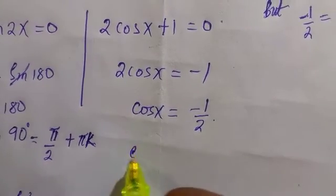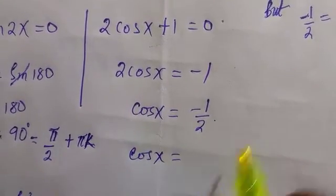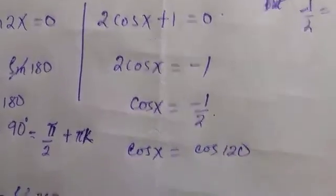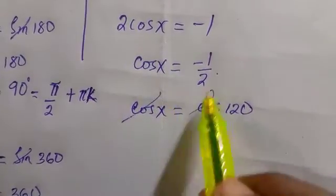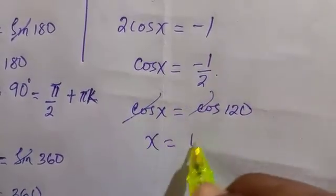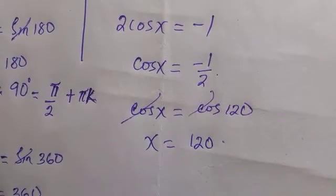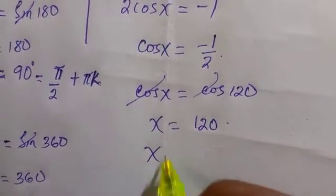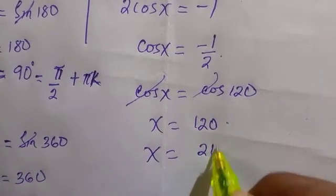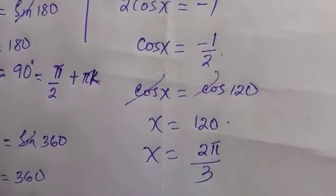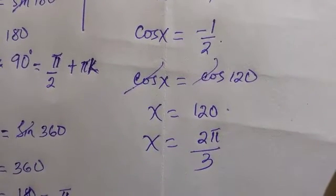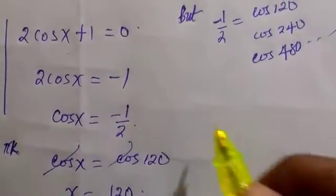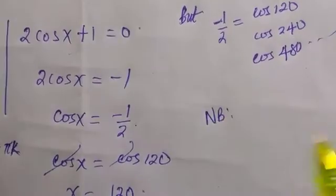Therefore, we come here. For the first one, we have cos(x) = cos(120°). Therefore, we cancel: x = 120°, and we can also write this as x = 2π/3, which is still 120°.